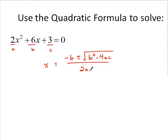If I substitute in my a, b, and c values, b is 6, so it's going to be negative 6 plus or minus square root of b, 6 squared minus 4 times a, which is 2, times c, which is 3, all over 2 times a, so 2 times 2.